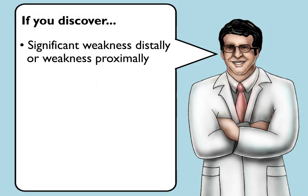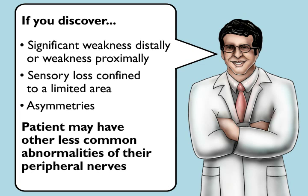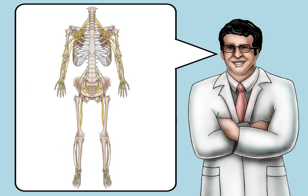If you discover significant weakness distally or weakness proximally, sensory loss confined to a limited area, or any asymmetries on your exam, the patient may have other, less common abnormalities of their peripheral nerves, such as a mononeuropathy affecting a single nerve or an autoimmune neuropathy. In that case, use what we have reviewed about the peripheral nerves and your knowledge of the complete neurologic exam to identify the correct diagnosis.